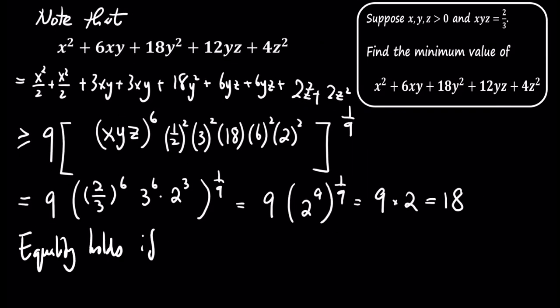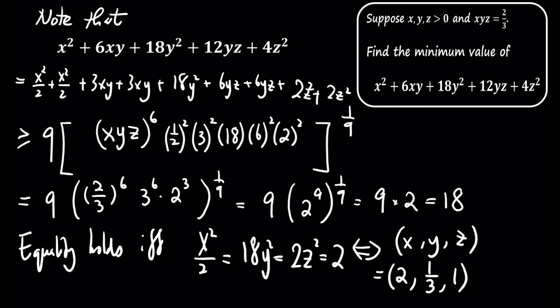Now, let's consider the condition for equality in the AM-GM inequality. Equality holds if all terms are equal, so we set up the equations. We find that x²/2 equals 18y², which equals 2z². This leads us to the values x equals 2, y equals 1/3, and z equals 1.